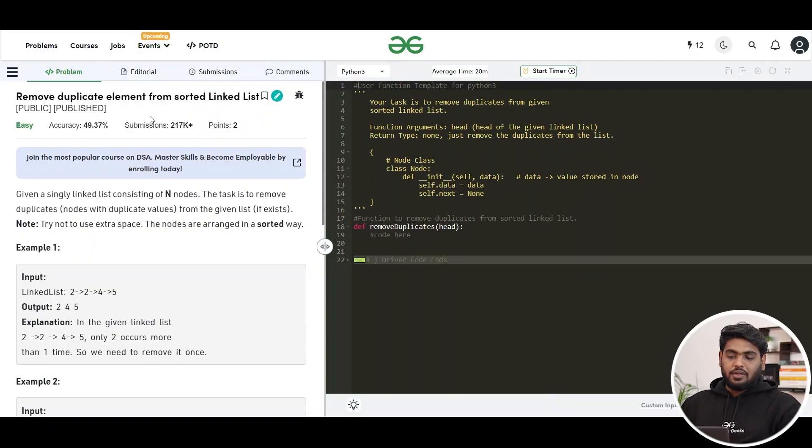Hello everyone, let's solve the problem of the day. The problem is remove duplicate elements from sorted linked list. So given a singly linked list consisting of n nodes, the task is to remove duplicate nodes with duplicate values from a given list.